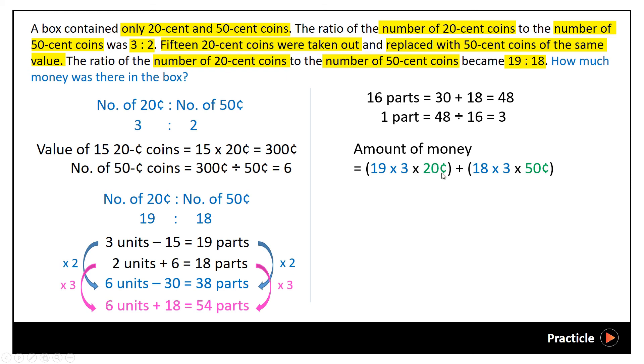Then we do the same thing for 50-cent coins. We take 18 parts here times 3 to find the number of 50-cent coins, and then we multiply it by the value, which is 50 cents. Then once we have these 2 parts, we need to add them together. After we have done all the working, you should be able to get a value of 38 dollars and 40 cents, which is the answer.